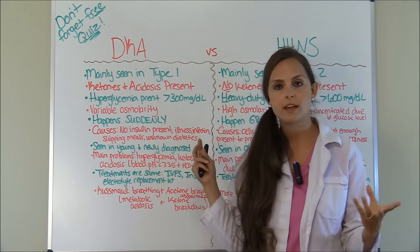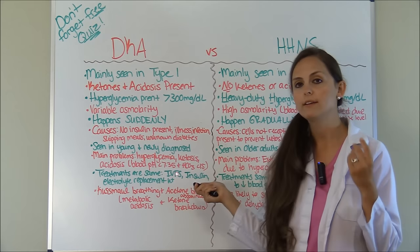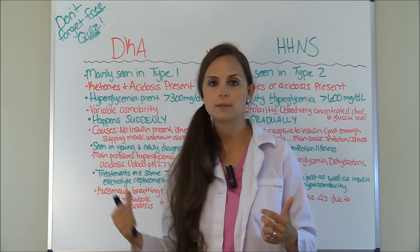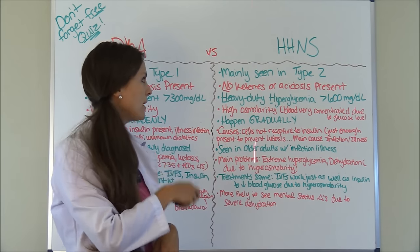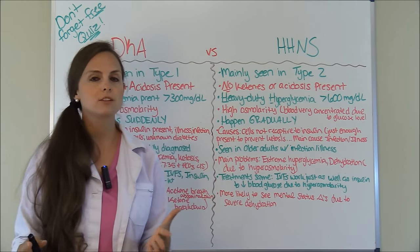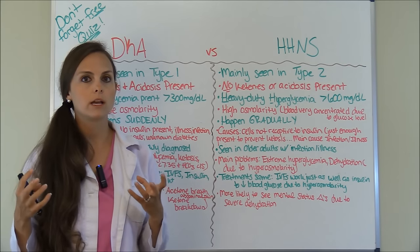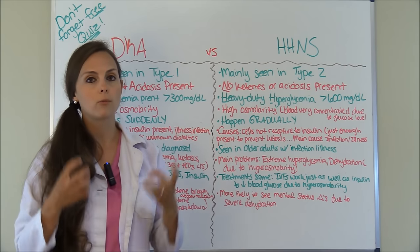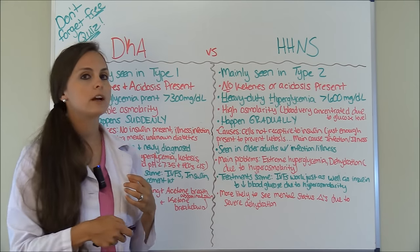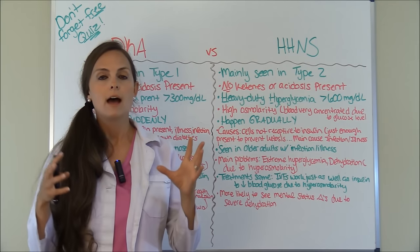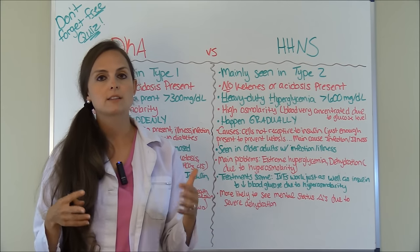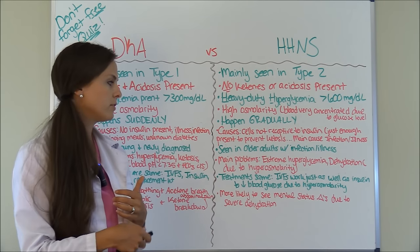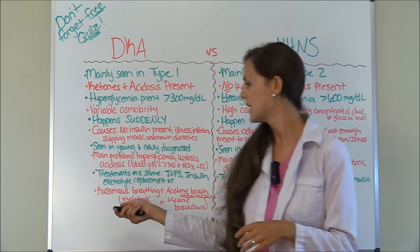Treatments are the same for both conditions and include IV fluids, insulin, and electrolyte replacement — most likely potassium replacement. However, with HHNS, one of the best treatments is simply getting the patient rehydrated, because those cells are literally shriveled and wasted. Rehydrating them will move electrolytes back and actually decrease blood sugar just as well as insulin. IV fluids are super important in patients with HHNS.